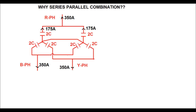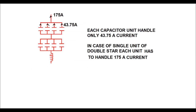In each star connection the current supplied per phase is 175 ampere. With the series-parallel combination, each capacitor unit handles only 43.75 ampere, instead of 175 ampere. If a single unit were used, it would have to handle 175 ampere — four times more current — making its design more complicated.